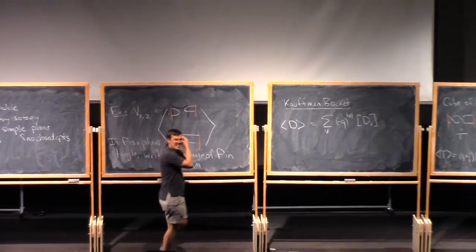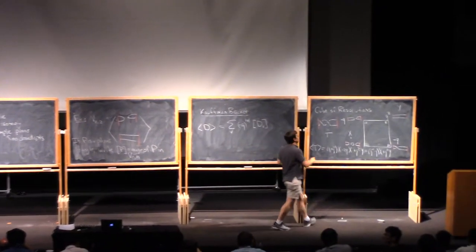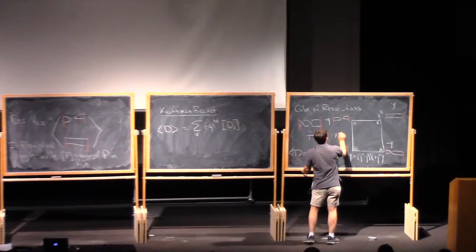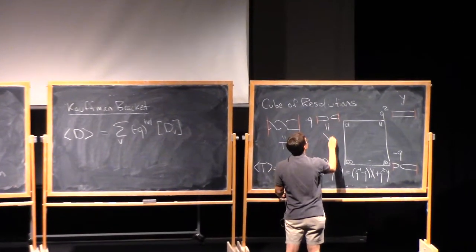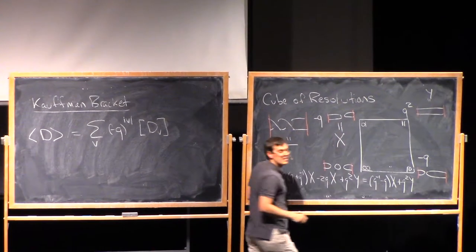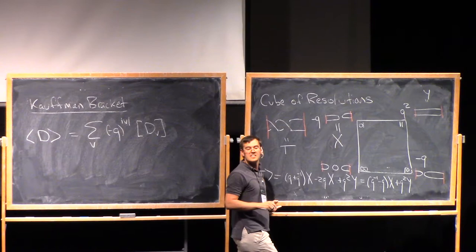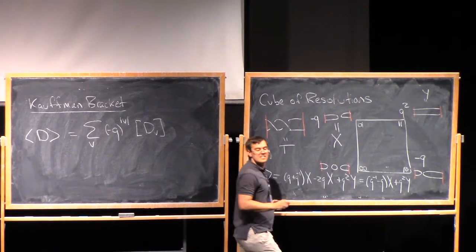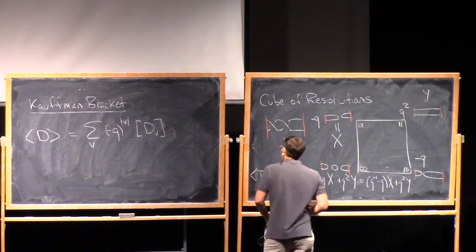Question: is x the thing with the circle or without the circle? Answer: x is definitely the thing without the circle.